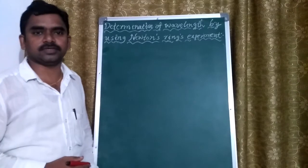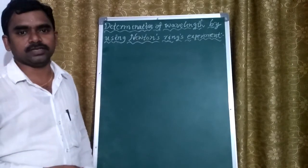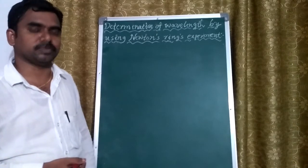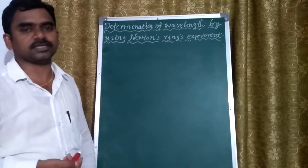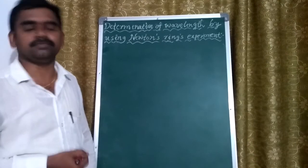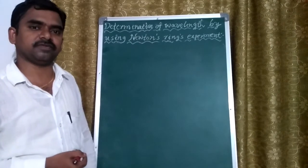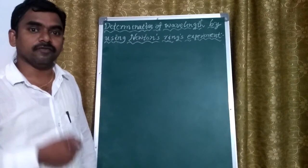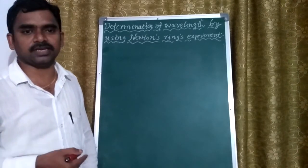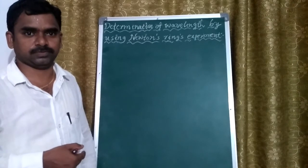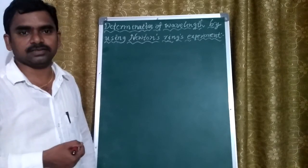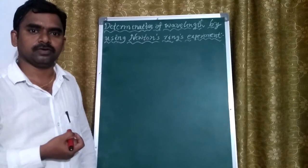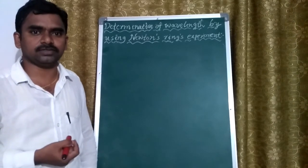Previously, we have discussed about the Newton's ring experiment. What is the importance of that Newton's ring experiment? By using that experiment, we will determine the radius of curvature of a given planoconvex lens and also the wavelength of the source of light we have used. Regarding that, we have to derive a small formula. Now, we will derive that formula.